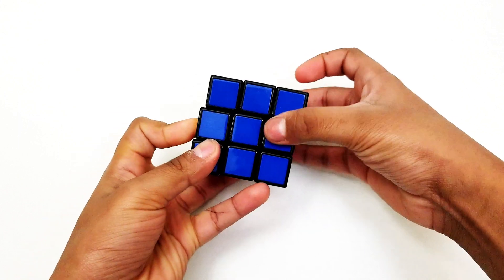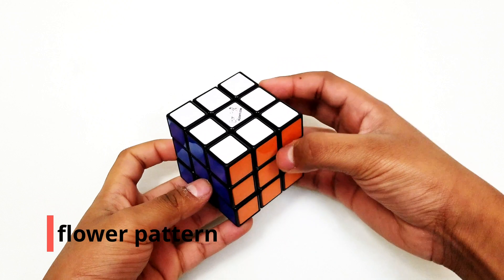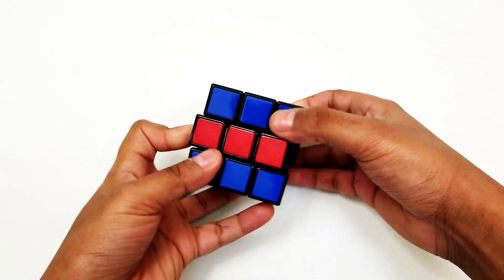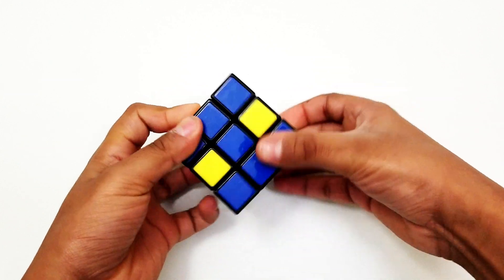The next pattern that we are going to do is a flower pattern, or the dot pattern. To do this, spin the middle layer and turn, spin the middle layer and turn, spin the middle layer and turn until you get the flower pattern.